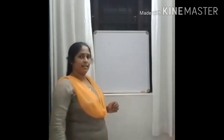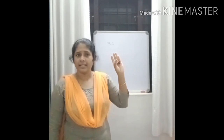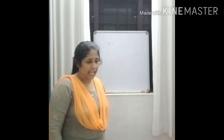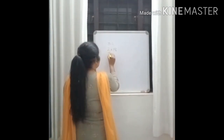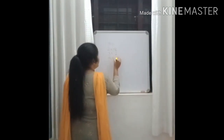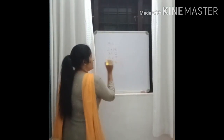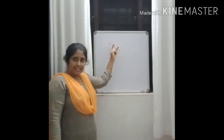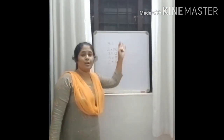I write thirty-six. How can we write thirty-six as a product of two numbers? Two into eighteen, three into twelve, four into nine, and six into six — four methods. Two into eighteen is thirty-six, three into twelve is thirty-six, four into nine is thirty-six, and six into six is also thirty-six.